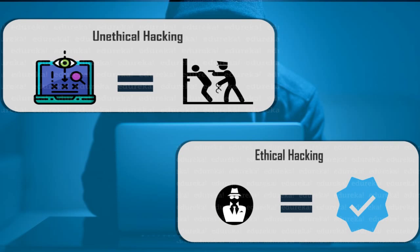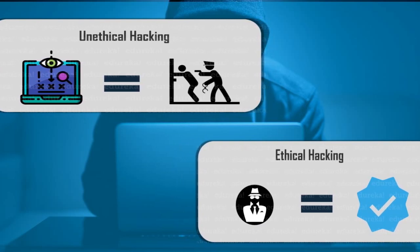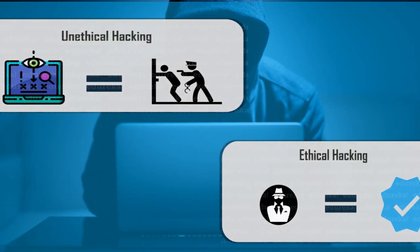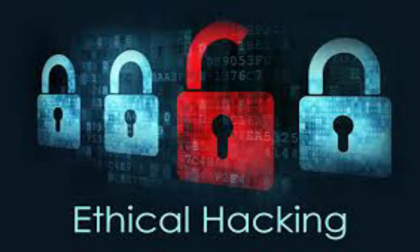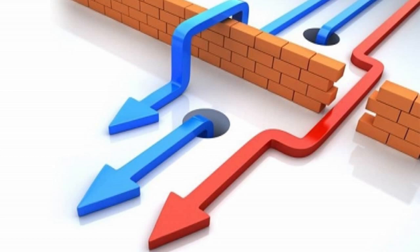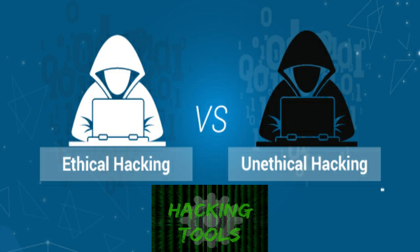Ethical hacking involves authorized data access and checking emails and systems. Ethical hacking is used in our systems. We work with network vulnerabilities. Ethical hackers are used to provide security. They use the same tools and tricks as malicious users in order to improve security.